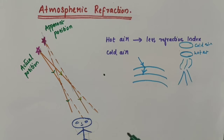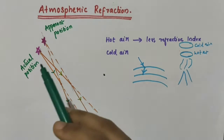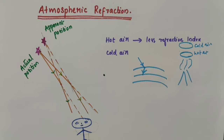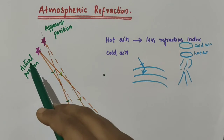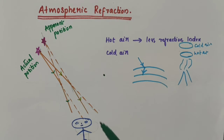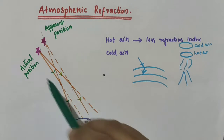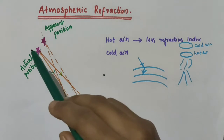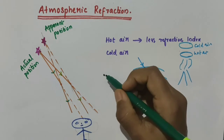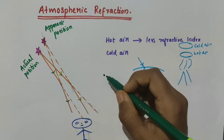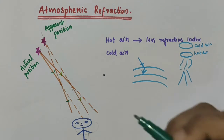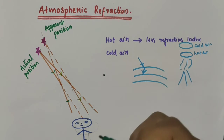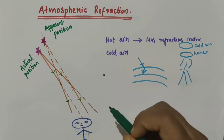Twinkling of a star is due to atmospheric refraction of starlight. Actually stars do not really twinkle — they appear to twinkle when seen from the surface of the earth. Because stars are very, very far away from the surface of the earth, even through large telescopes they appear as pinpoints — stars appear as a point object.